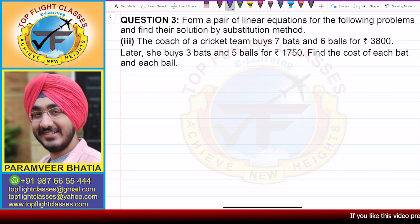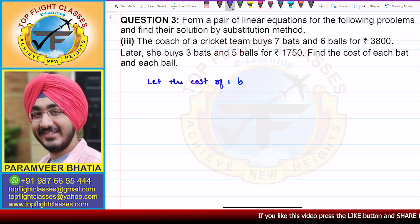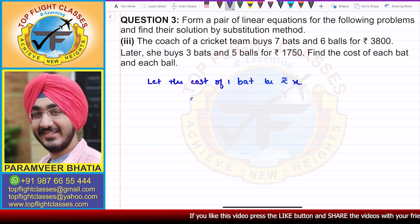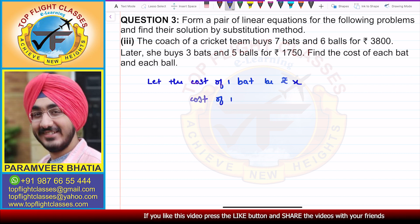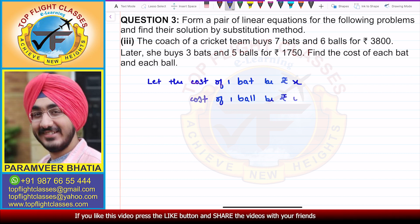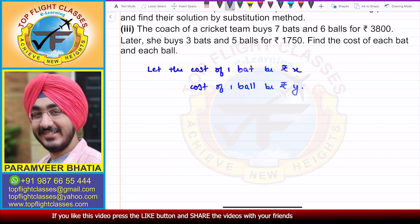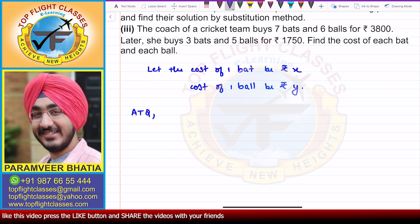So we need to find the price of each bat and each ball. Let us say that the cost of one bat is rupees x and the cost of one ball is rupees y.